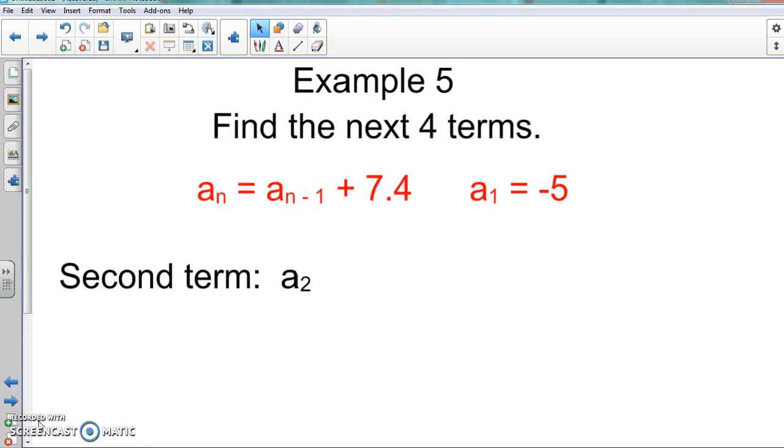So here, and also when we look at the problem because it's different than what we've looked at, but they like to show you things or do things like this when it comes to the final exam and all that good stuff. So here, aₙ is going to equal aₙ₋₁ plus 7.4.